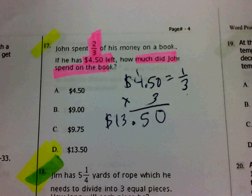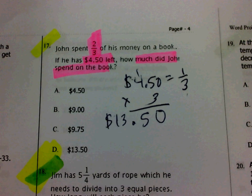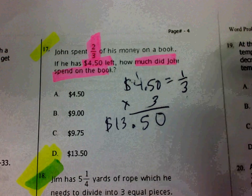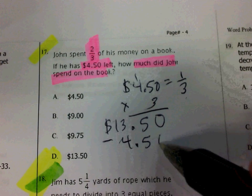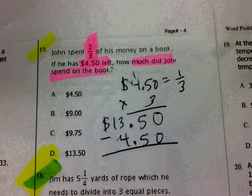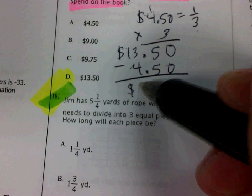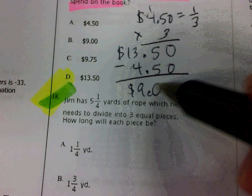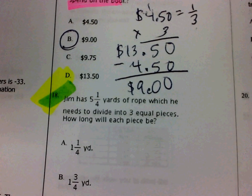Now that's not how much money John spent on the book — that's how much money John started with. To find out how much he spent on the book, subtract out the amount that you have left. $13.50 minus $4.50 is $9, so John spent $9 on the book.